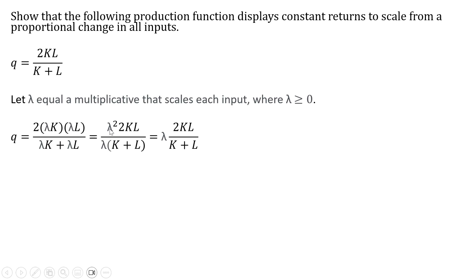In the numerator, we can factor out the lambda term, so we get lambda squared. In the denominator, we can do the same thing — we can factor out the lambda — and you'll notice that lambda squared divided by lambda just leaves us with lambda.